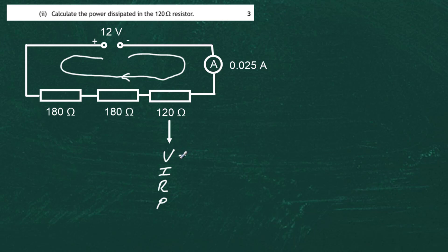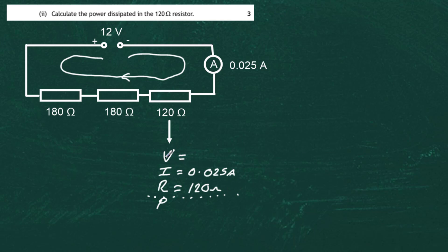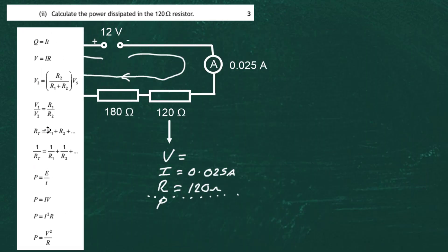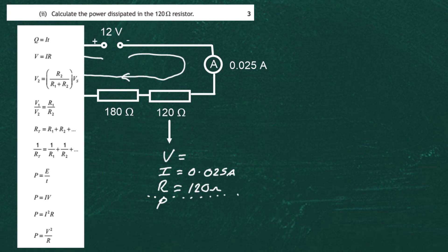So we can list V, I, and R for the component. Do we know the voltage? Not yet. Do we know the current through it? Yes — 0.025 amps. Do we know the resistance? Yes — 120 ohms. If we know two of V, I, R we can find the missing one. V equals I times R, which is in our data sheet. So we get 0.025 amps multiplied by 120 ohms.